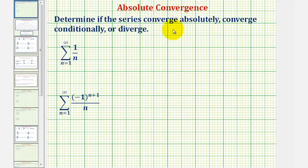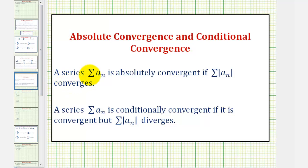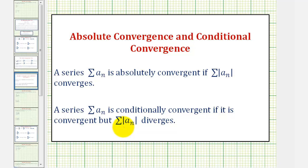We're going to determine if the infinite series converge absolutely, converge conditionally, or diverge. To review: a series, the summation of a sub n, is absolutely convergent if the summation of the absolute value of a sub n also converges. A series is conditionally convergent if it is convergent, but the summation of the absolute value of a sub n diverges.